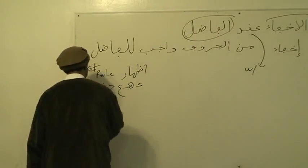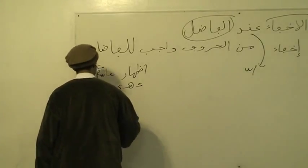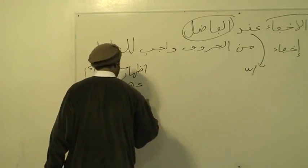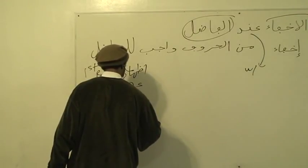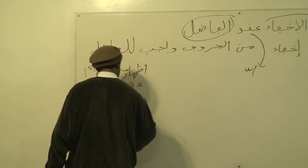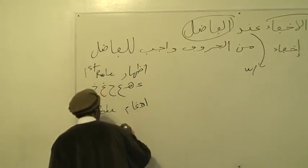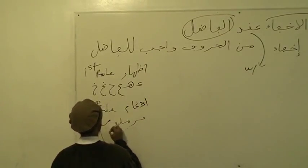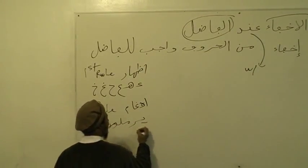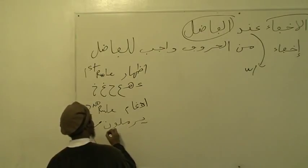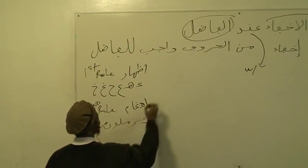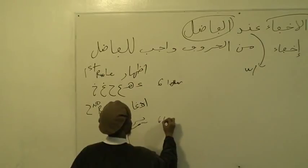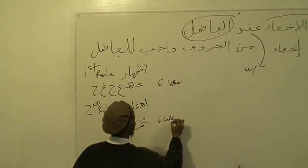What is the next rule, the second rule? That's Yaira, Mim, Lam, Wa, Nun — another six letters. This is six letters, right?